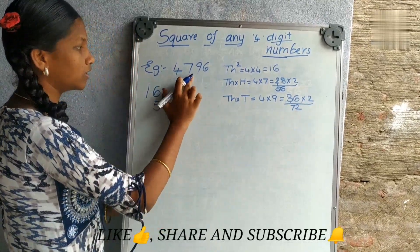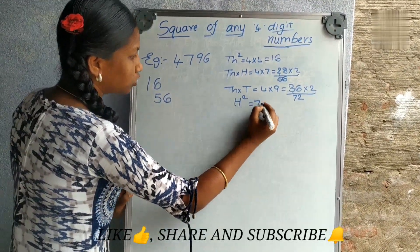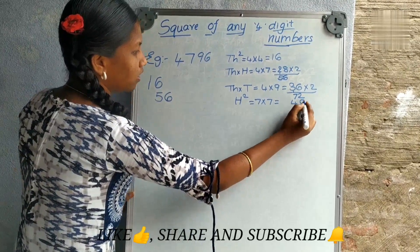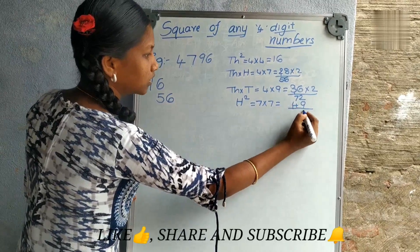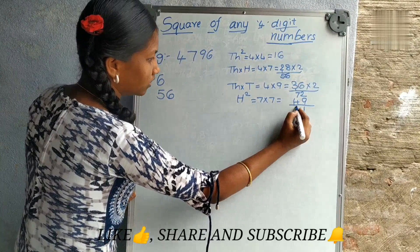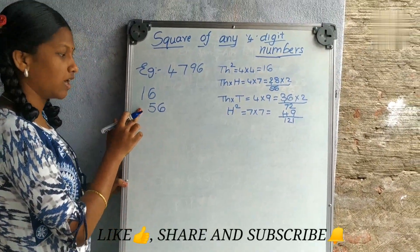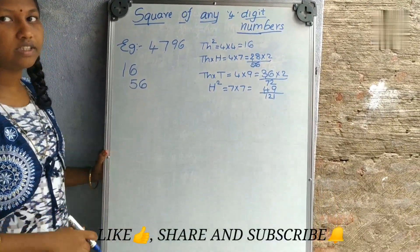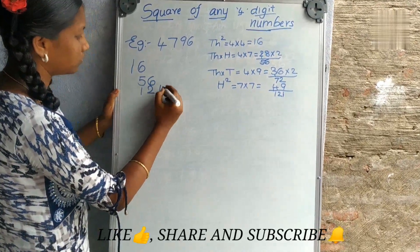Now we have to square the hundreds digit. 7 squared equals 7 into 7 — 7 sevens are 49. Now we have to add these two numbers: 7 plus 4 is 11, plus 1 is 12. When 2 digits come we have to leave one place and write. When 3 digits come we don't leave the place and write. Write 121 here.